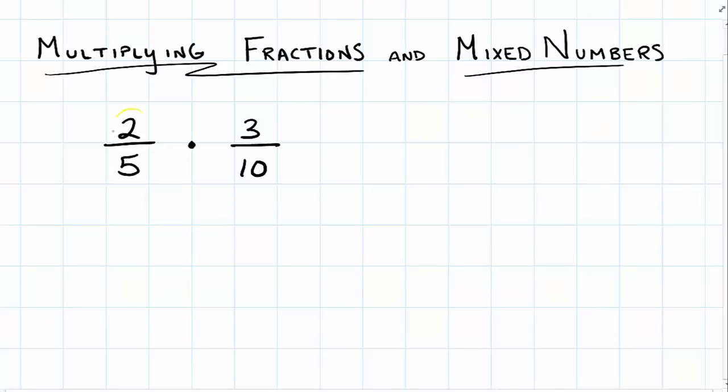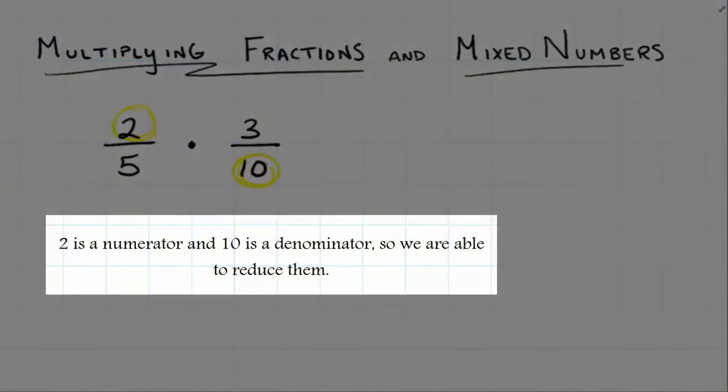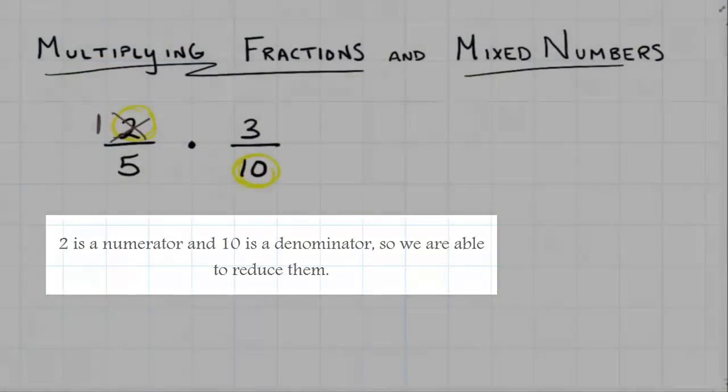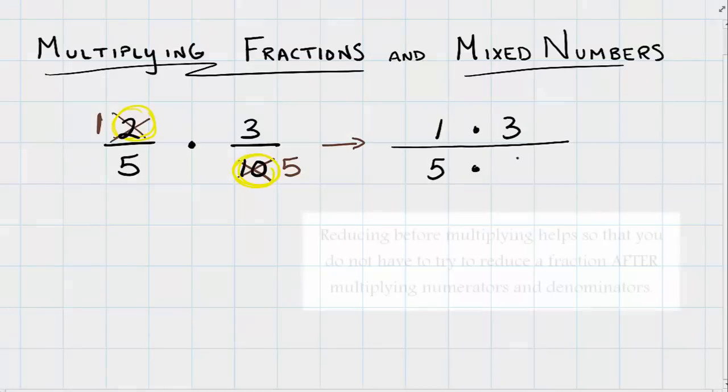But you are able to reduce anything from the top to anything on the bottom. So the first thing that I see is the number 2 and the number 10. I can take a 2 and I can divide it into this number 2 one time, so I can change that to a 1. That same number 2 will divide into my 10 five times. So now I've actually recreated my multiplication problem as 1 times 3 as my numerator and 5 times 5 as my denominator.